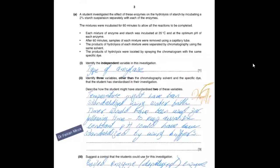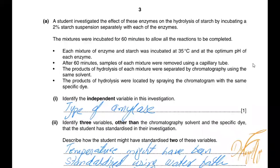They are asking you, a student investigated the effect of these enzymes on hydrolysis starch by incubating 2% starch suspension separately for each of these enzymes. The mixture was incubated for 60 minutes to allow reaction to be completed. This is to allow enzyme and substrate complexes to form and the substrate to break into products. Each mixture of enzyme starch was incubated 35 degrees so temperature was kept constant at optimum pH of each enzyme accordingly because three different enzymes have three different pHs. After 60 minutes, samples of each mixture was removed using a capillary tube. The product of hydrolysis of each mixture were separated using chromatography using the same solvent. The products of the hydrolysis were located by spraying chromatogram with the same specific dye.